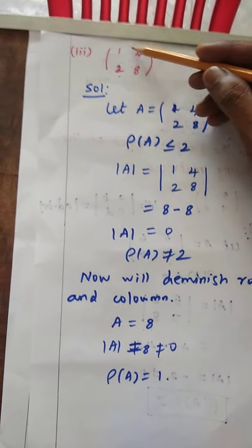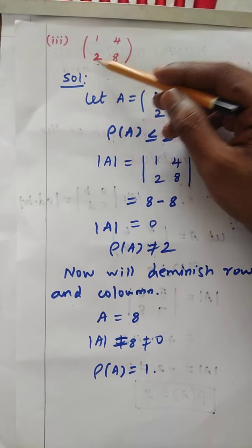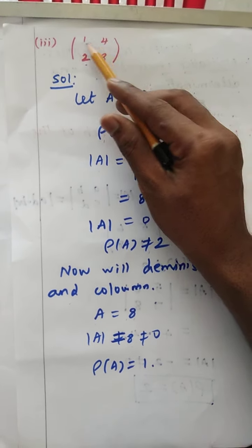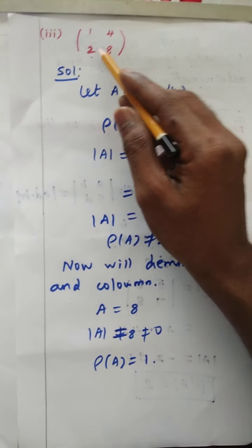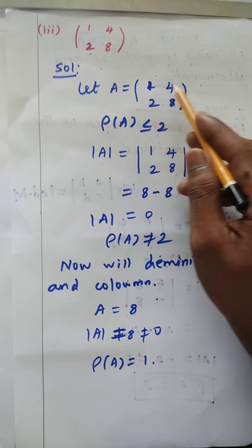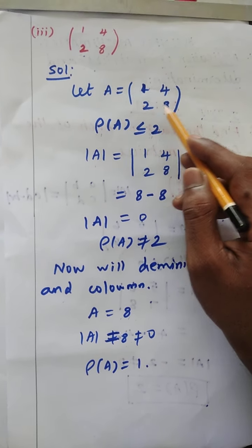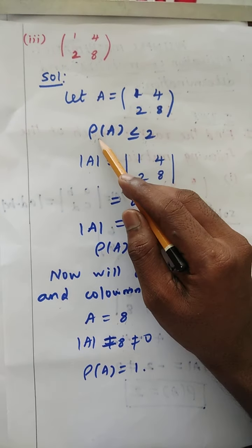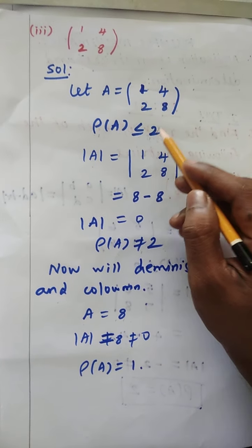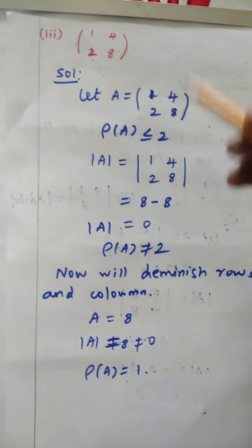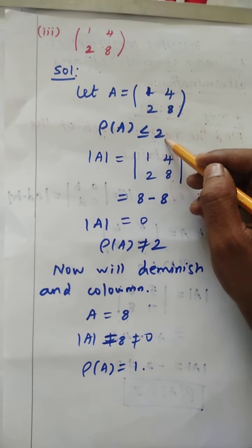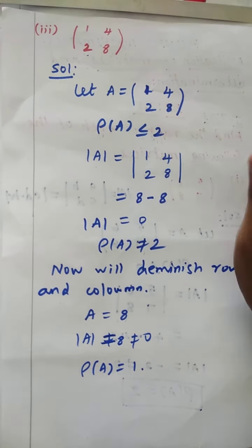The next given matrix is [1, 4; 2, 8]. This is also a 2×2 matrix with 2 rows and 2 columns. Let A equal to [1, 4; 2, 8]. So rank of A is less than or equal to 2. For a 2×2 matrix, the maximum possible rank is 2 and minimum is 1.